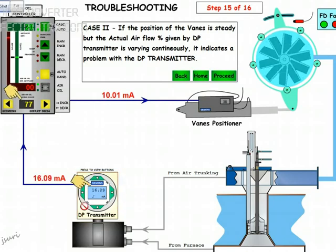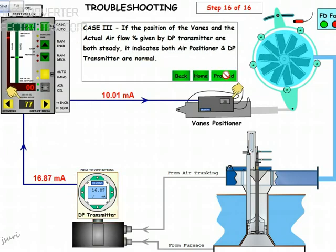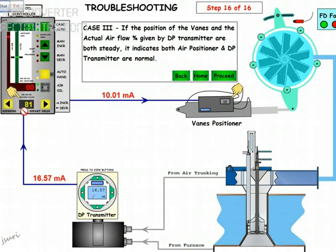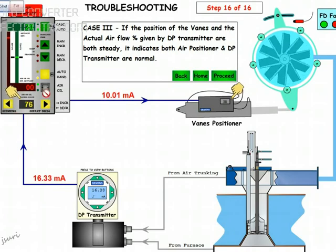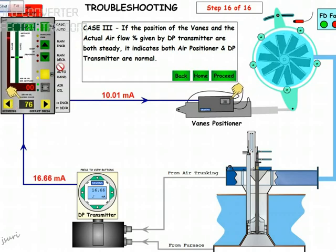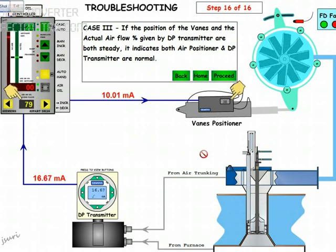Case 3: The vane position is okay, the DP transmitter is also okay, but you can see it is still fluctuating. The third problem is with the air oil controller, so you have to change this. This is how you check. If you have any doubt regarding this, you can message me. Thank you.